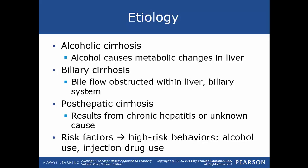Post-hepatic cirrhosis can result from chronic hepatitis B or C or from an unknown cause. The liver is shrunken in these individuals, with nodular formations with fibrosis causing extensive loss of liver cells. Risk factors include high-risk behaviors such as alcohol use and injection drug use, which increases the risk for hepatitis B, C, and D.